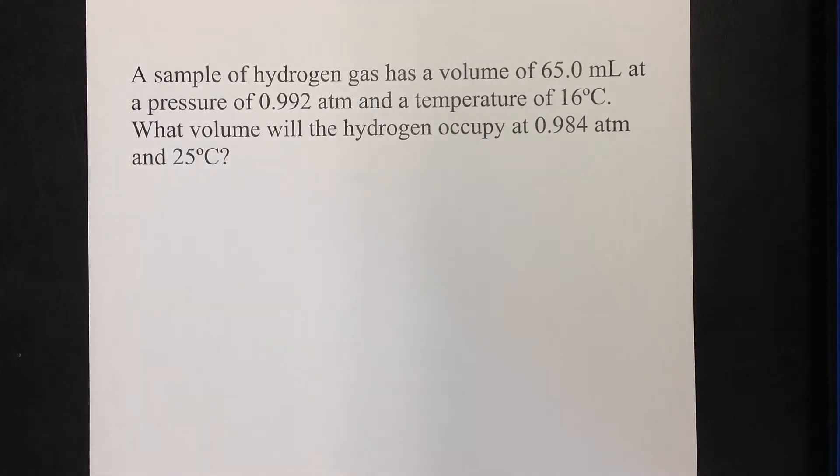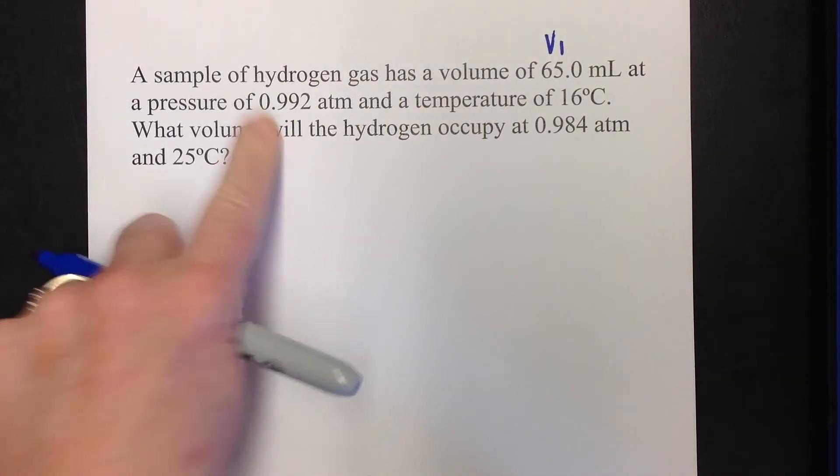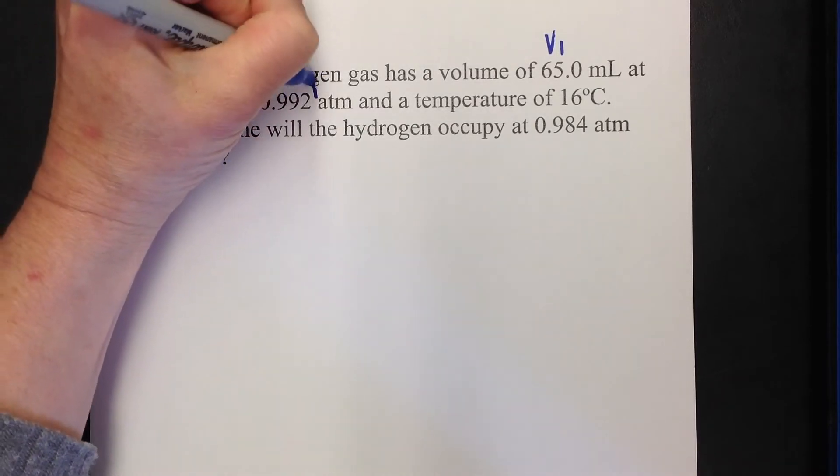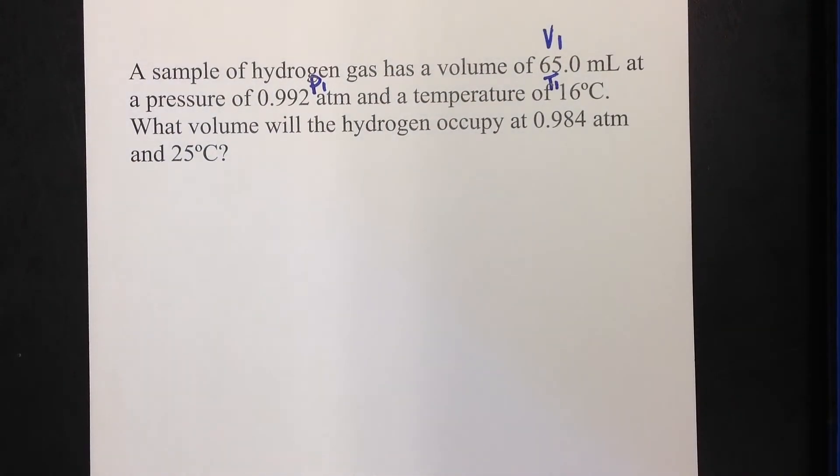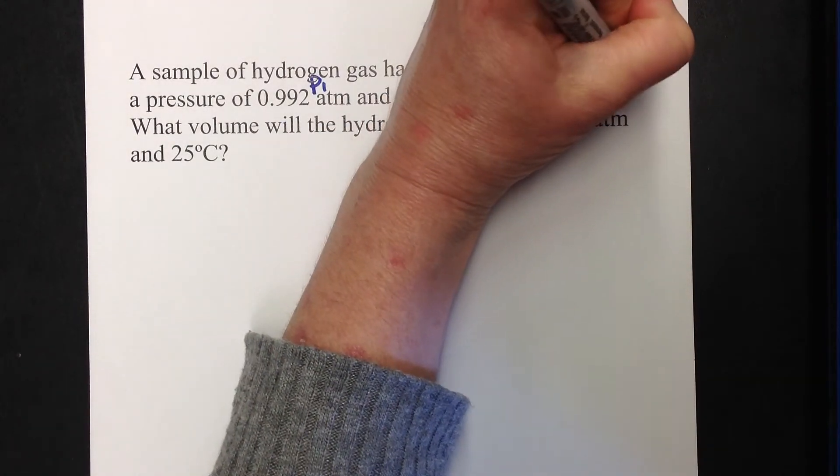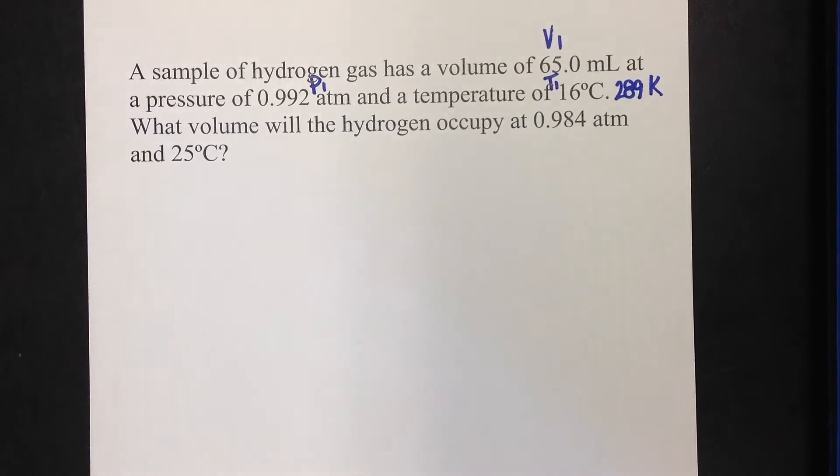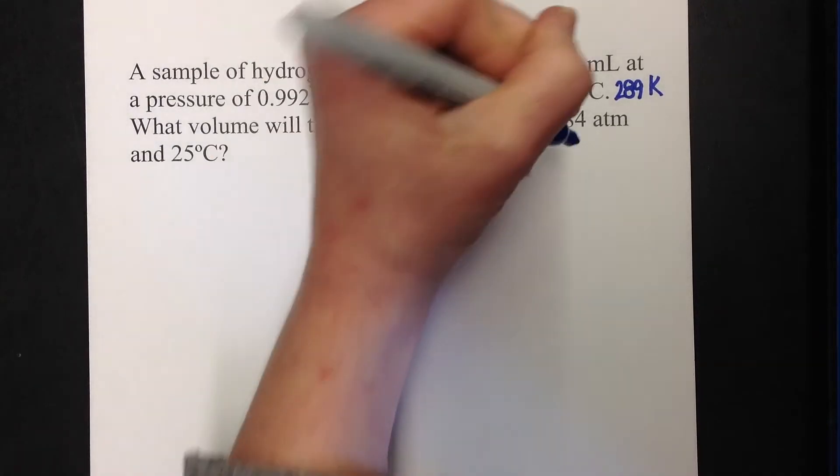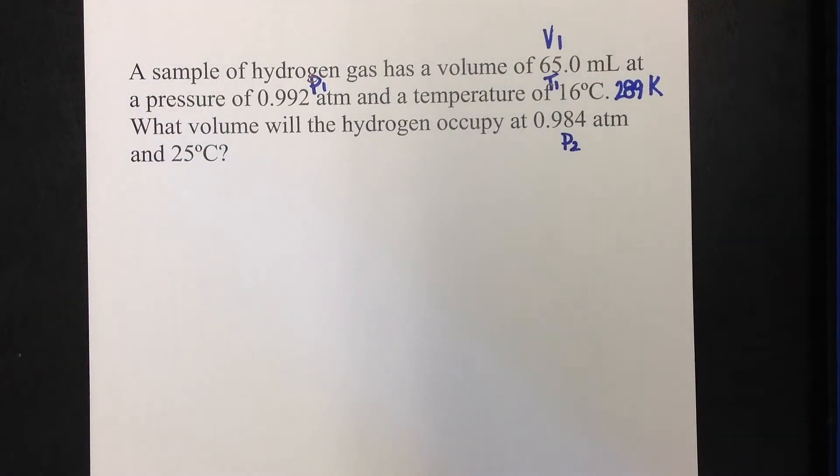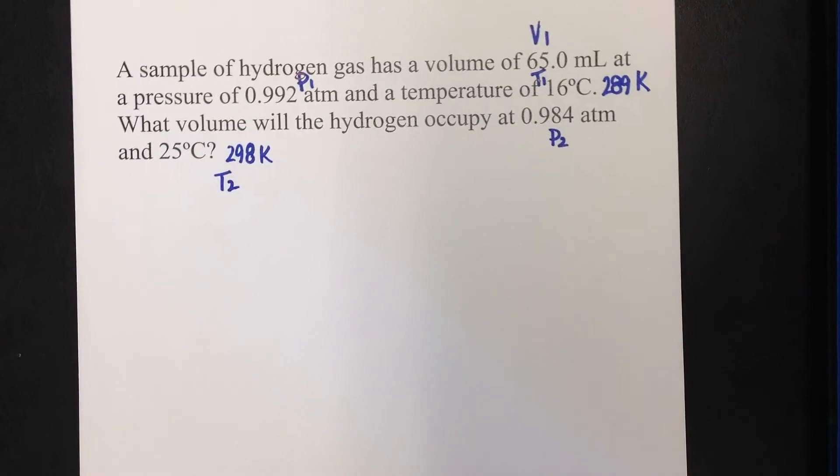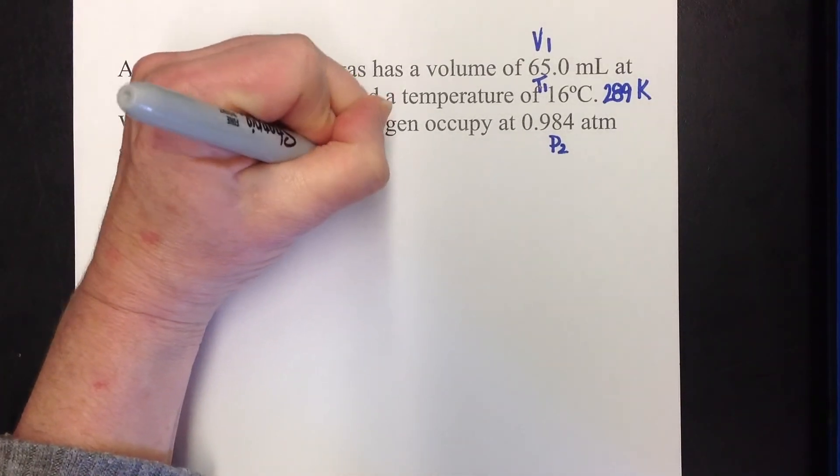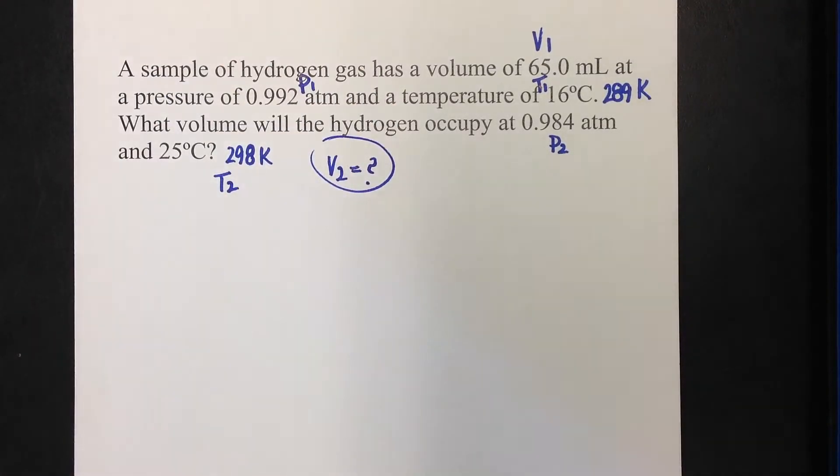A sample of hydrogen gas has a volume of 65 milliliters at a pressure of 0.992 atmospheres and a temperature of 16 degrees Celsius. I'm going to go ahead and change that - 16 plus 273, and I'm getting 289. I'd just like to have that ready to go. What volume will the hydrogen occupy at 0.984 atmospheres - that's another pressure - and 25 Celsius, which I know is 298 K, and that's my T2. It looks like, once again, I am solving for V2. Are you always solving for V2? No, it just so happens the problems we did are asking us to find that. So let's go ahead and write our combined gas law. I know I'm using it because everything has come to the party.